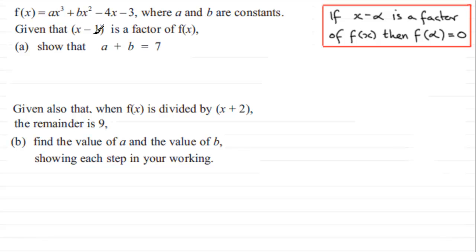When I compare this to what we have here, the alpha would be just the one. So we're saying that f of 1 should equal zero, and that's our starting point. Let's write down that we're given f of one equals zero. Therefore, all we need to do is substitute x as one. So we're going to have a multiplied by one cubed plus b multiplied by one squared minus four times one minus three, and this is going to equal zero.